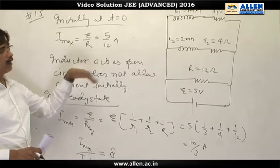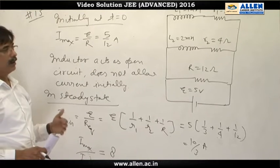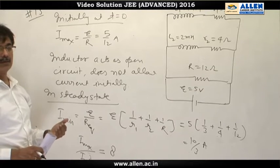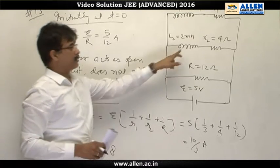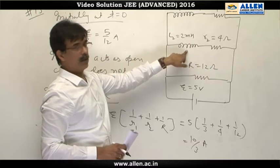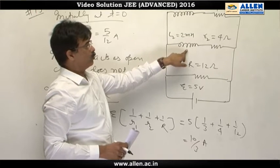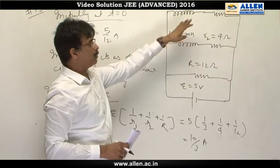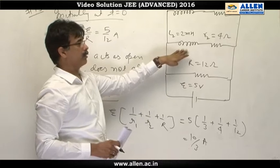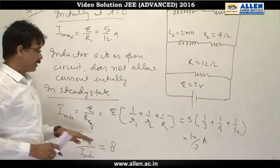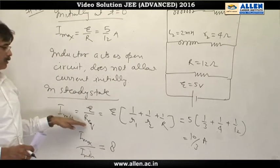When steady state is attained, then di by dt is 0, rate of change of current is 0. So inductor acts as a short circuited wire. So in a steady state, all the three resistors come into account. In steady state, minimum current passes.